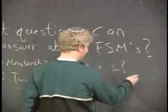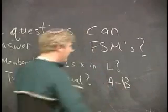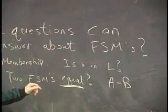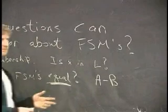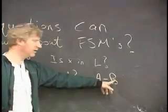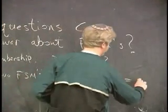If two fsms are equal, let's call them a and b, then if you calculate their difference, what should that equal? It should equal nothing, right? If you take away all the strings in b from all the strings in a and they're equal, then you should get nothing.